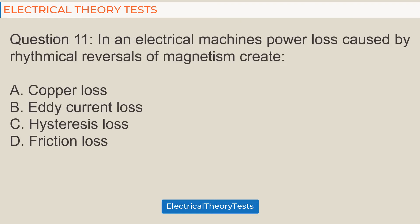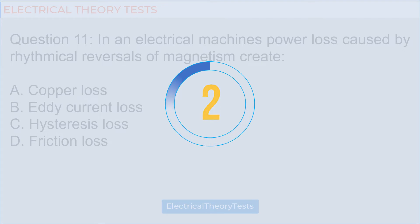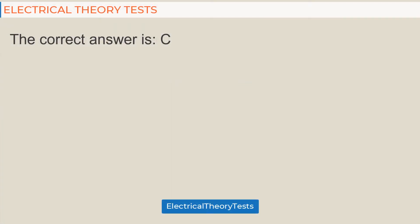Question 11: In an electrical machine, power loss caused by rhythmical reversals of magnetism creates — a) copper loss, b) eddy current loss, c) hysteresis loss, d) friction loss. The correct answer is c) hysteresis loss.